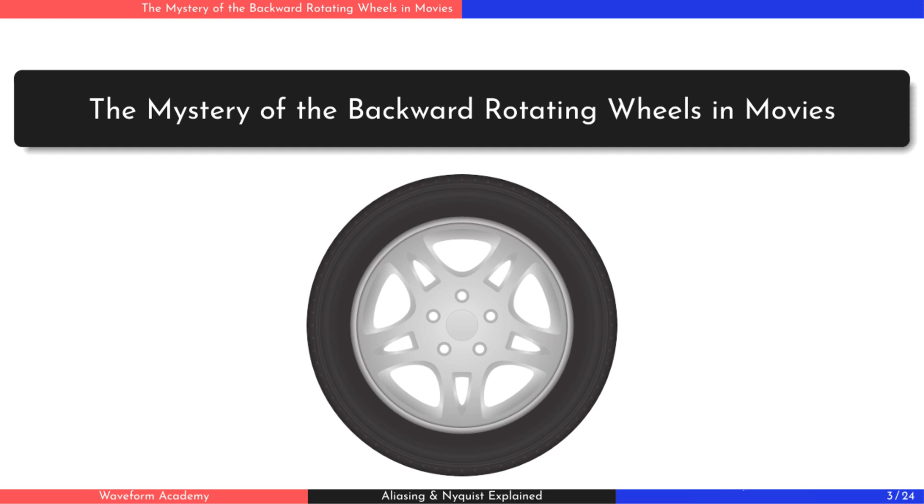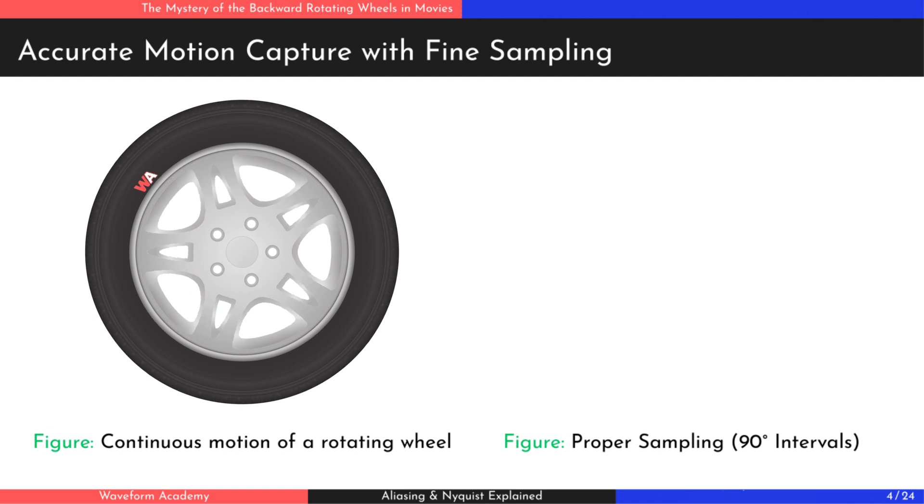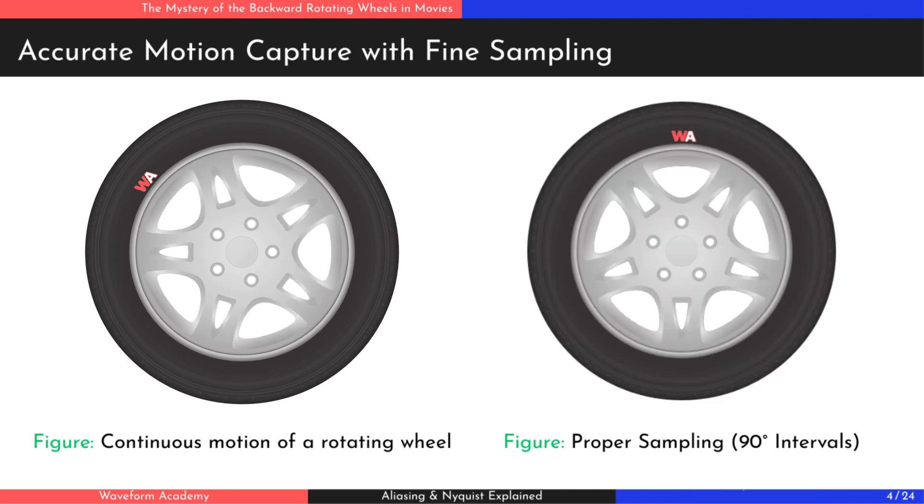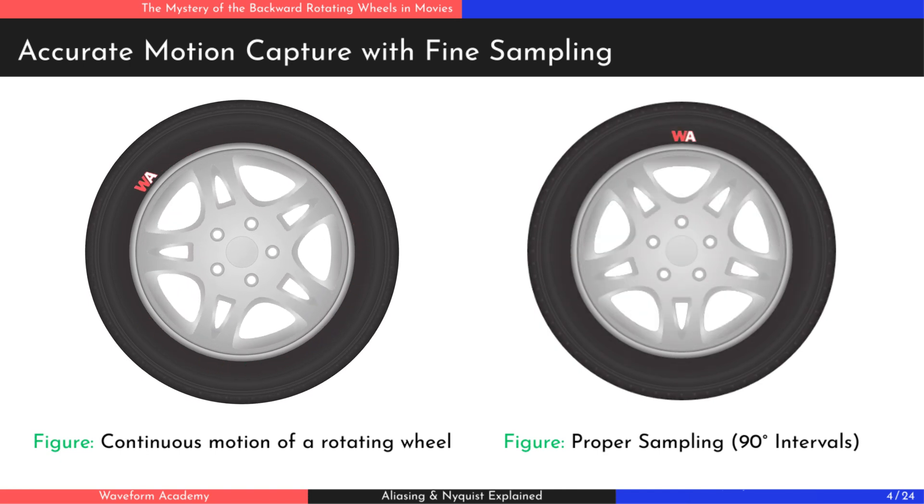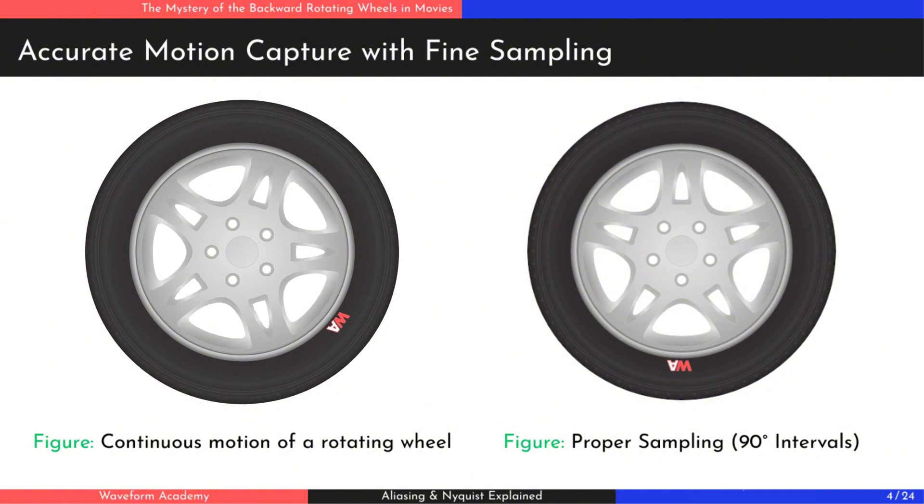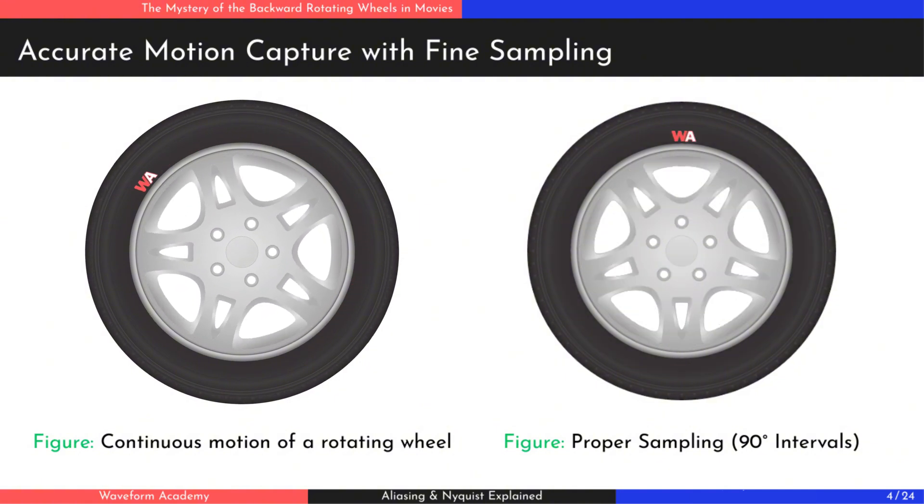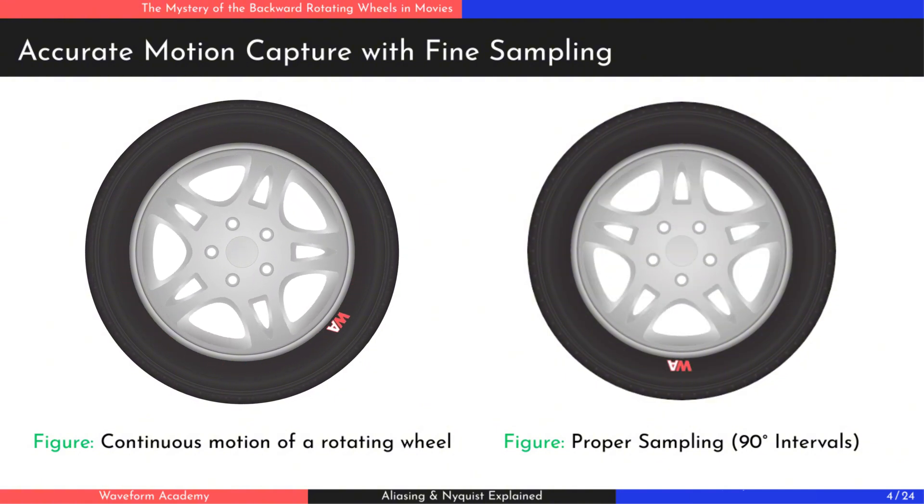Now, let's dive into the mystery behind the backward rotating wheels. On the left, we have a wheel spinning continuously. To represent this motion digitally, we take samples by capturing images every 90 degrees. As you can see, even though the motion isn't as smooth as the continuous rotation, we can still easily tell which direction the wheel is turning.